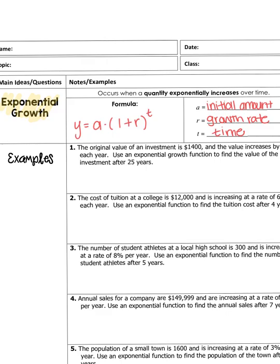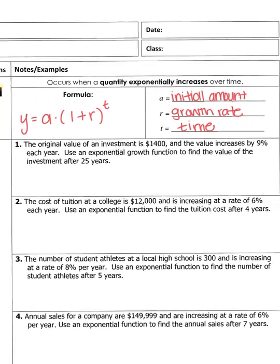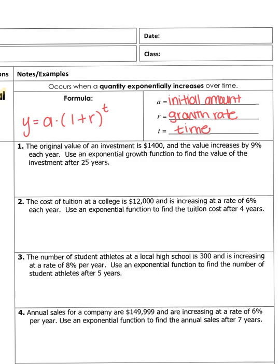Let's do the first example together. The original value of an investment is $1,400 and the value increases by 9% each year. We need to find the value after 25 years. So A, the initial amount, is $1,400 — 'original value' is a synonym for initial or starting value. Our growth rate r is 9%, and our time t is 25 years.